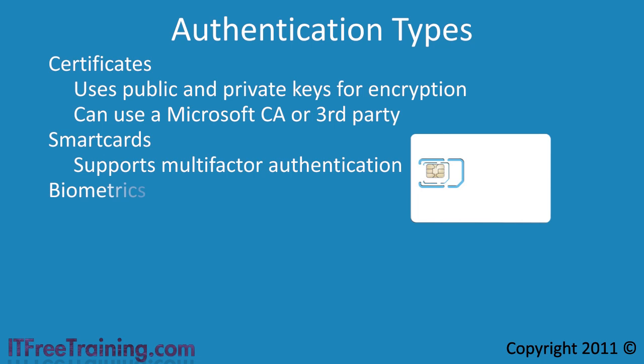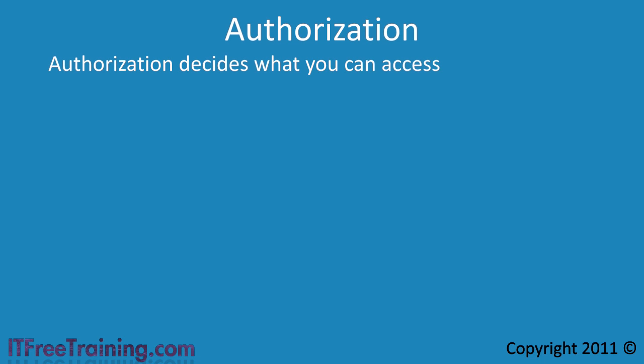The next type of authentication is biometrics, which includes fingerprint readers and eye scanners often seen in the movies. Using biometrics, the system can identify the person from their physical characteristics. This covers all the different ways you can authenticate on Windows 7. Once you are identified or authenticated, the next stage is authorization, which simply decides what you can access.